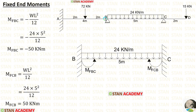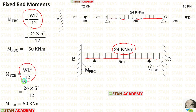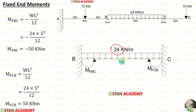Next, let us calculate the fixed end moments in span BC. There is a UDL of 24 kN per meter acting over the full span of 5 m. The formulas are MfBC equals minus WL²/12 and MfCB equals plus WL²/12. Applying W equals 24 and L equals 5, we get MfBC and MfCB.